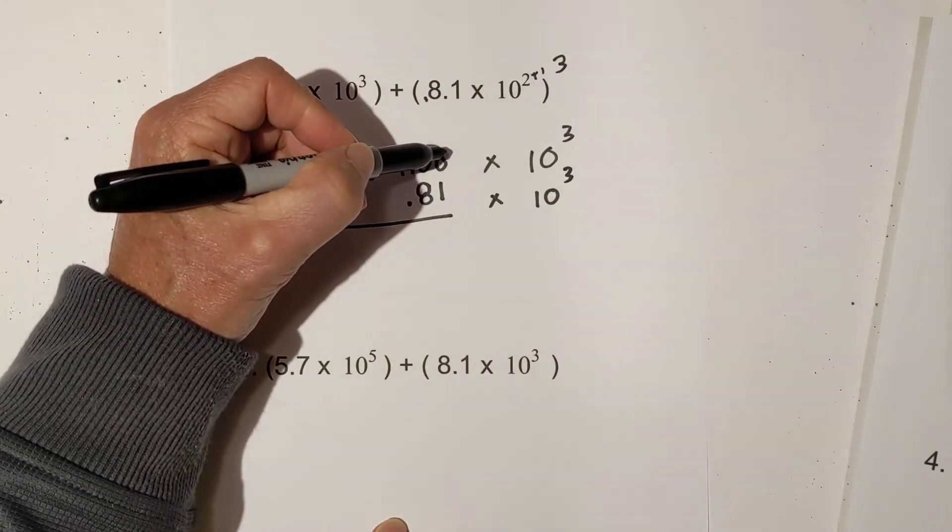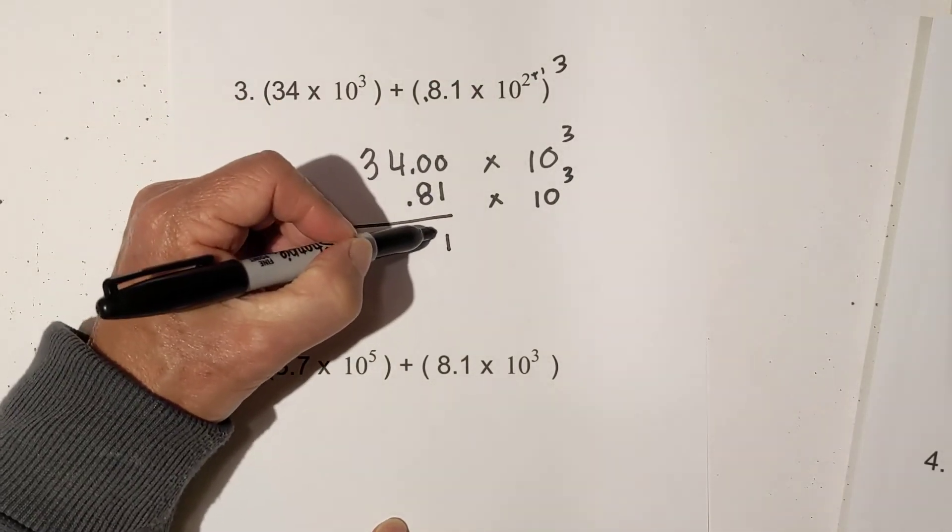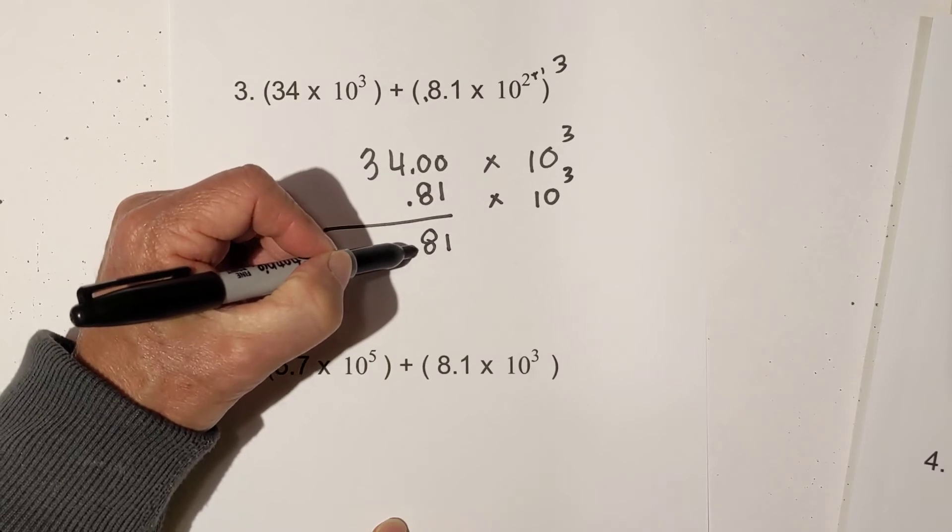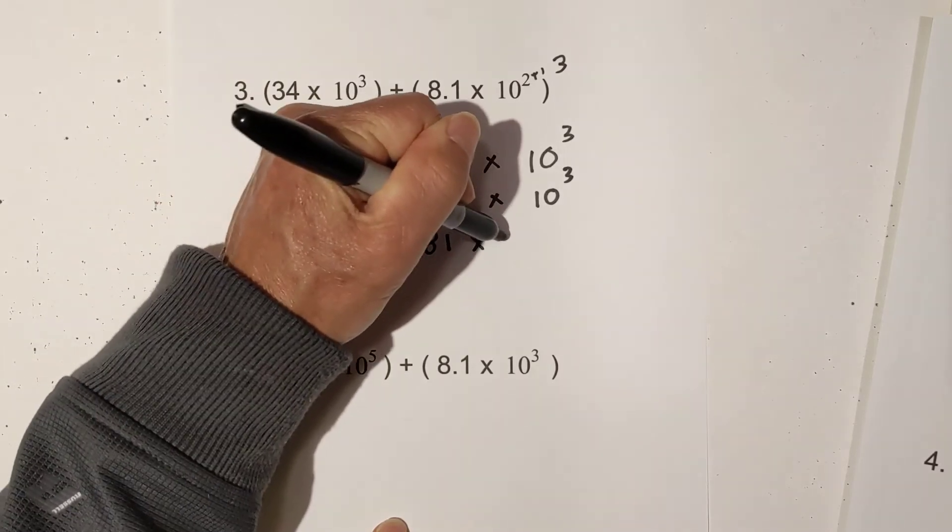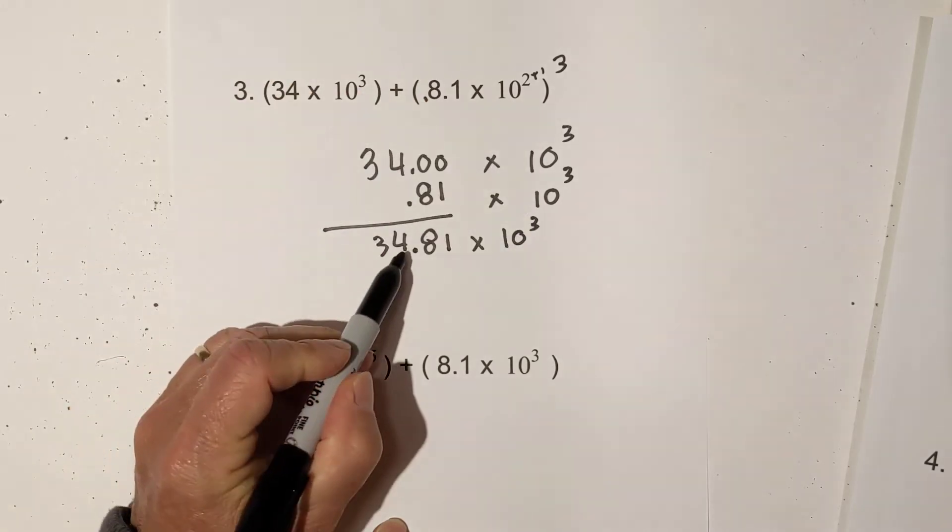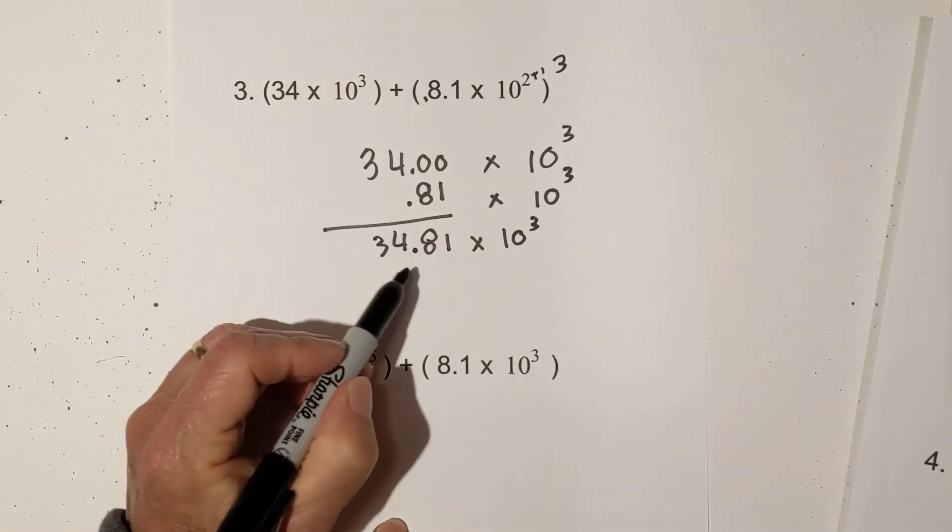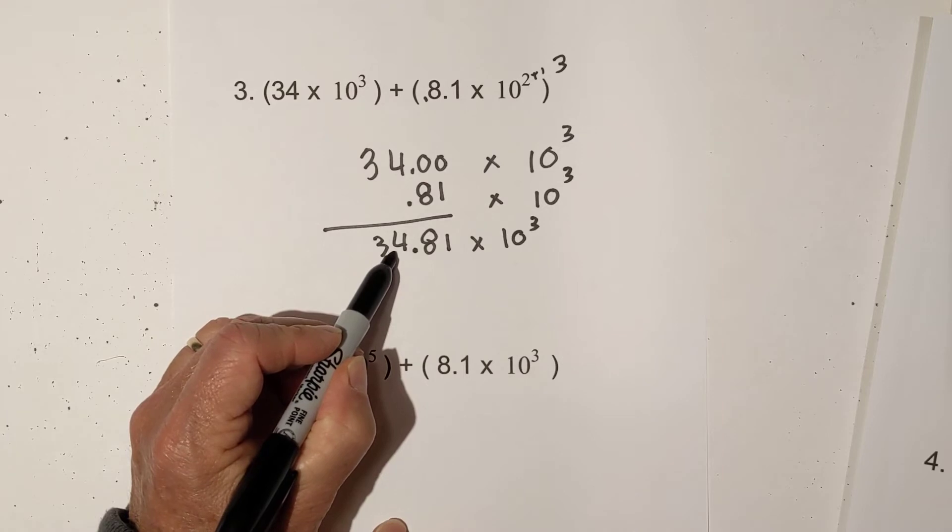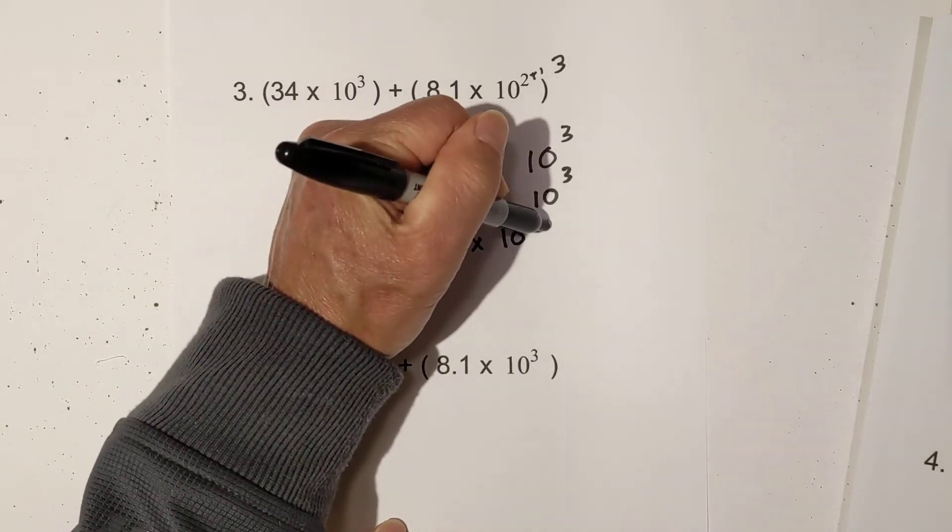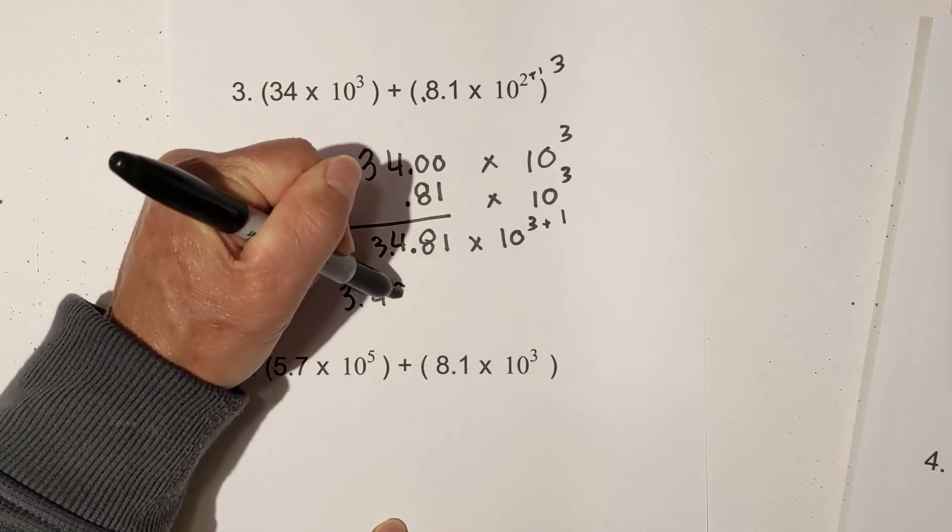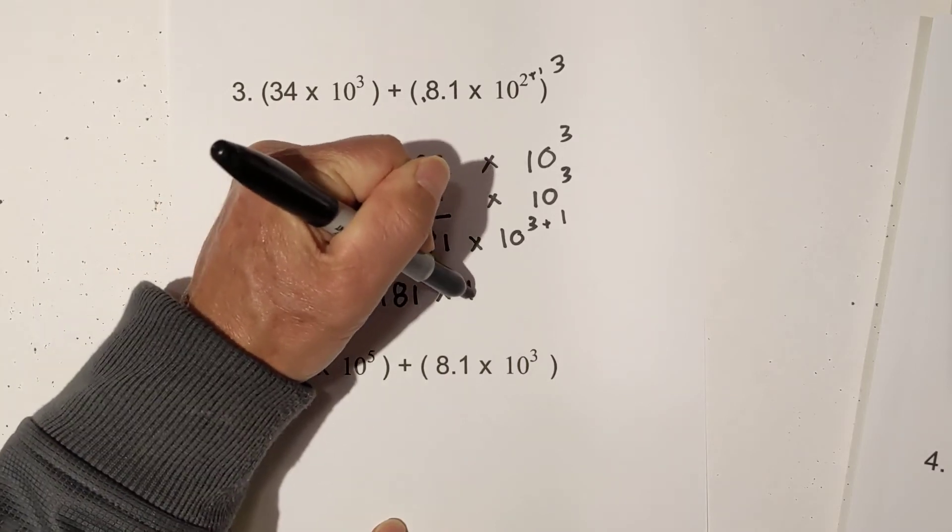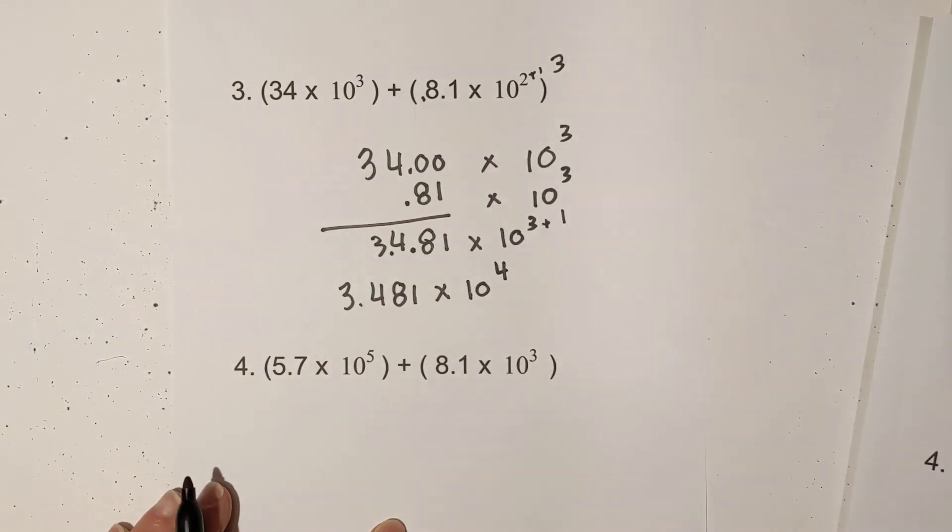This is now 10 to the third. I am adding. So I just go straight down. We have 34.81 times 10 to the third. The first number is not between 0 and 10. So I need to move it one place to the left, which means this is going to get larger. So it becomes 3.481 times 10 to the fourth.